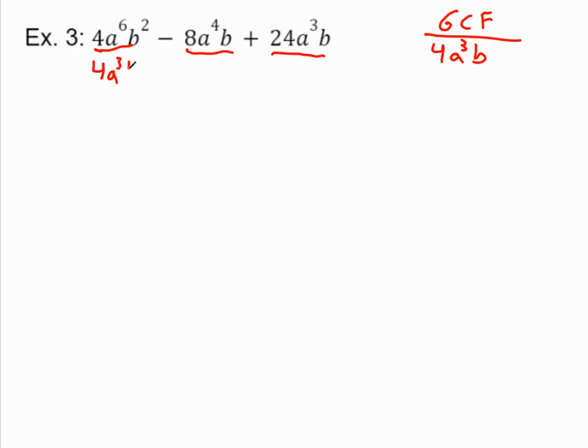So I'm just going to go ahead and now divide all of these things by 4a cubed b. Let's see what I get. First term, the 4s cancel. a to the 6th divided by a cubed is a cubed. b squared divided by b is b minus 8 divided by 4 is 2. a to the 4th divided by a cubed is a. bs cancel. And then on my last one here, 24 divided by 4 is 6. a cubed over a cubed cancels. b over b cancels. So it's just 6. Put that in parentheses, put my GCF on the outside, and I'm done.